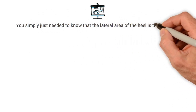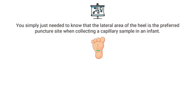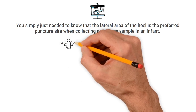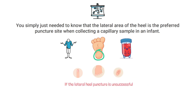To get this one correct, you simply needed to know that the lateral area of the heel is the preferred puncture site when collecting a capillary sample in infants. You could potentially use the fingertip, toe, or earlobe if the lateral heel puncture is unsuccessful, but these are not the preferred sites. The heel is the preferred and typically most effective site to stick in infants.